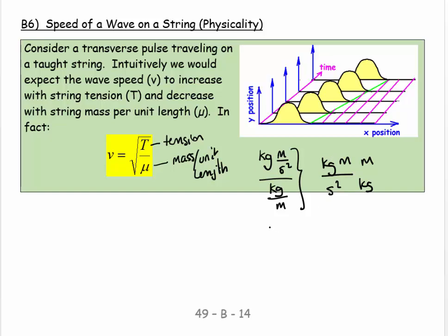So I get meters goes on top and kilograms goes on bottom. And that gives me, kilograms goes away. And I have meters squared over seconds squared. And if I want that to be meters per second, I'd better square root it. So the square root comes in to make, if I square root that, I get meters per second.